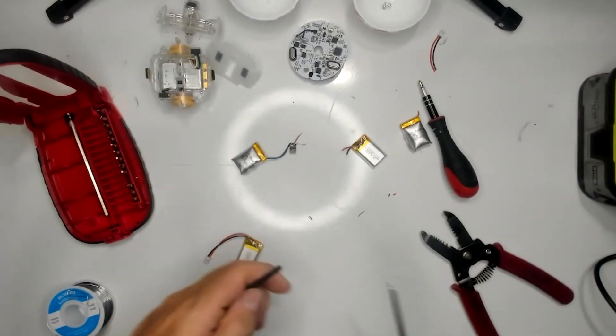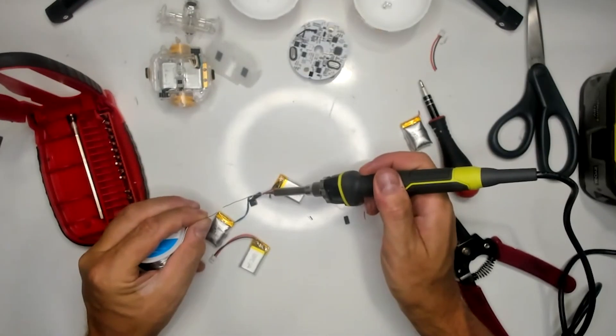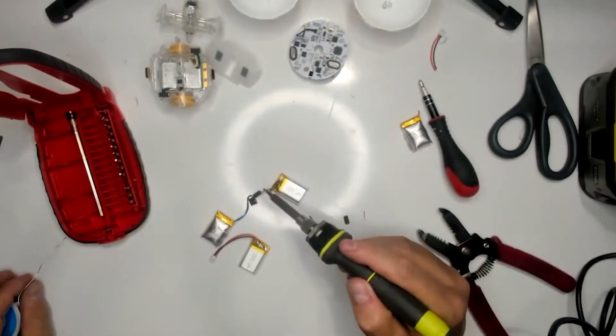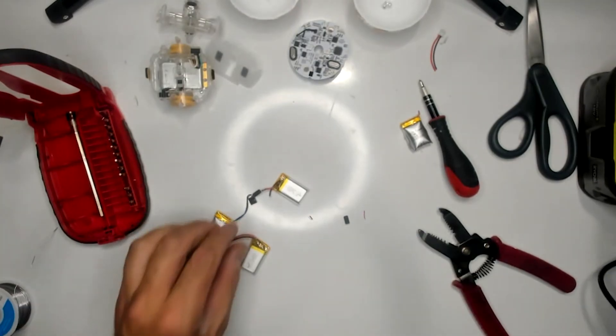I prepped a couple pieces of heat shrink and then put one on each wire, connected the wires, soldered them up and then got my lighter out and shrunk the heat shrink and good to go.